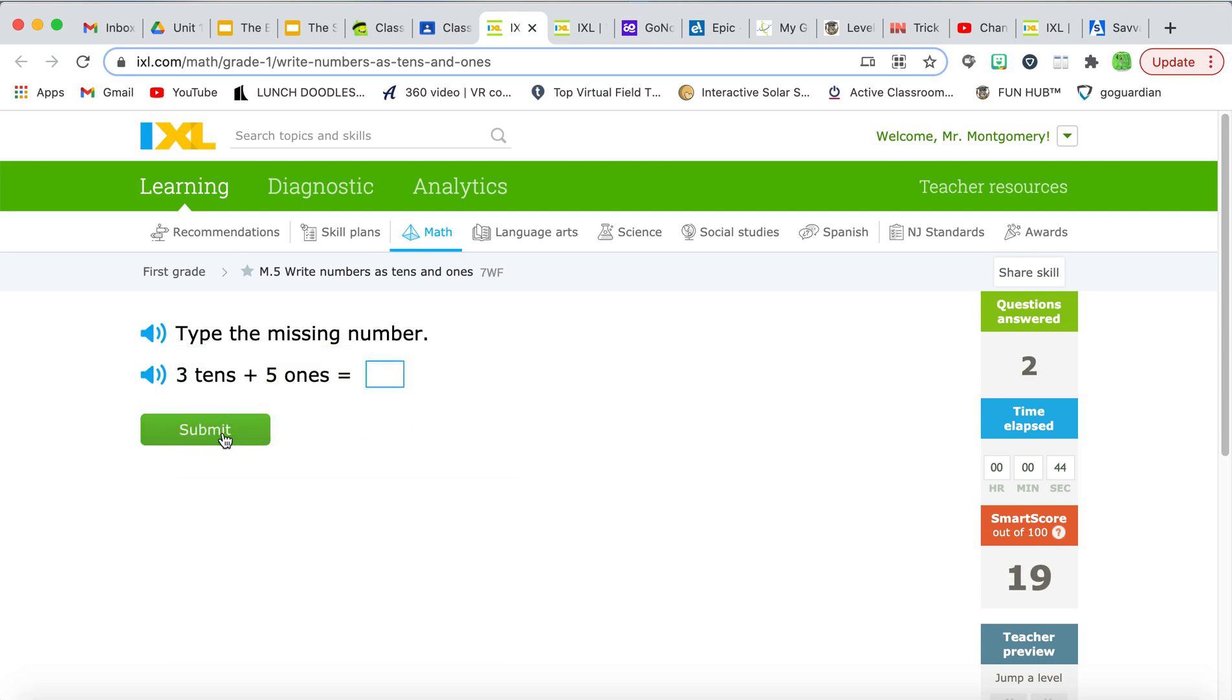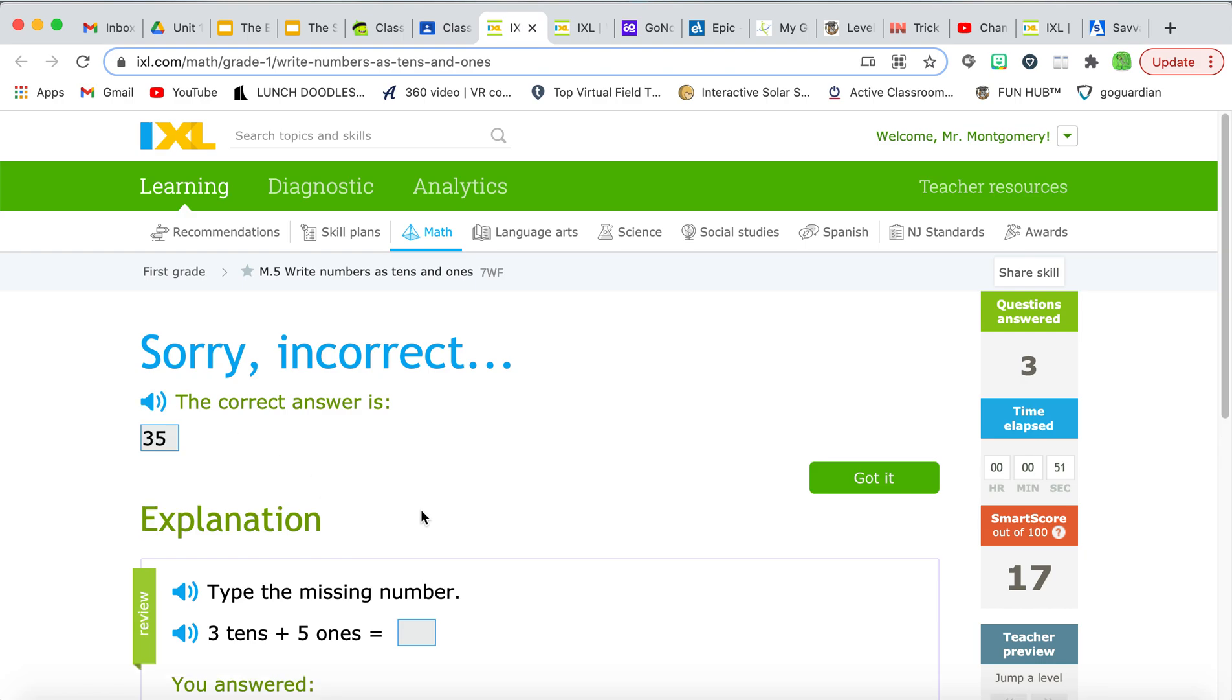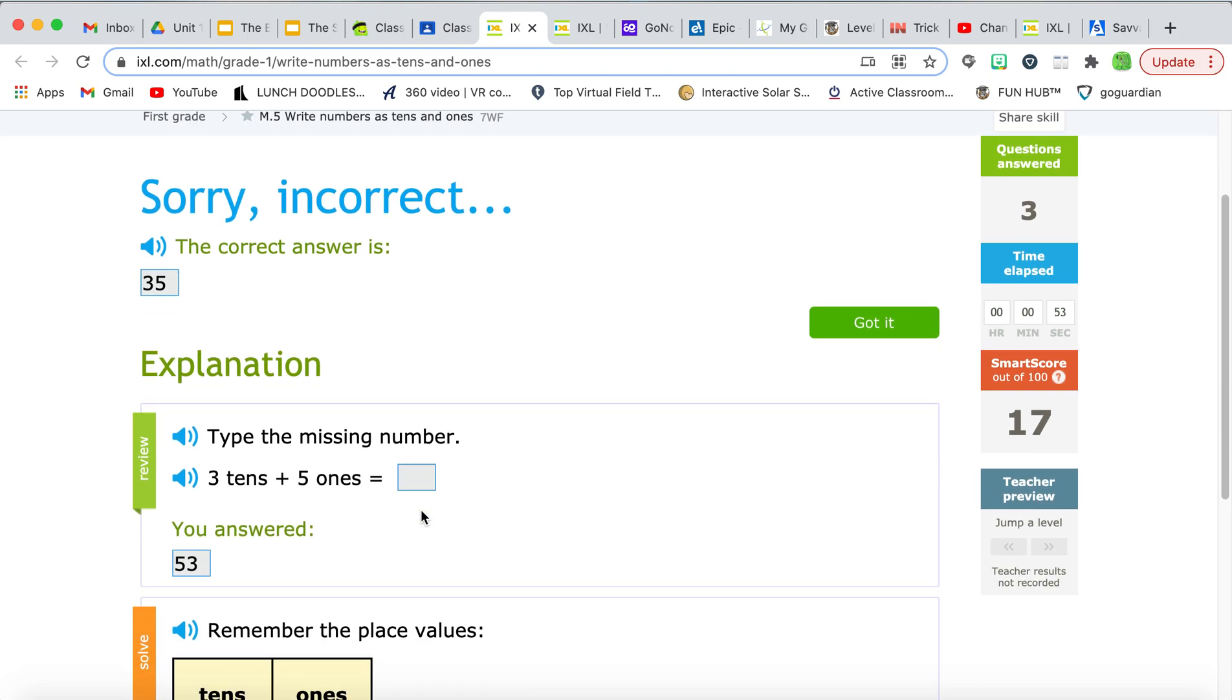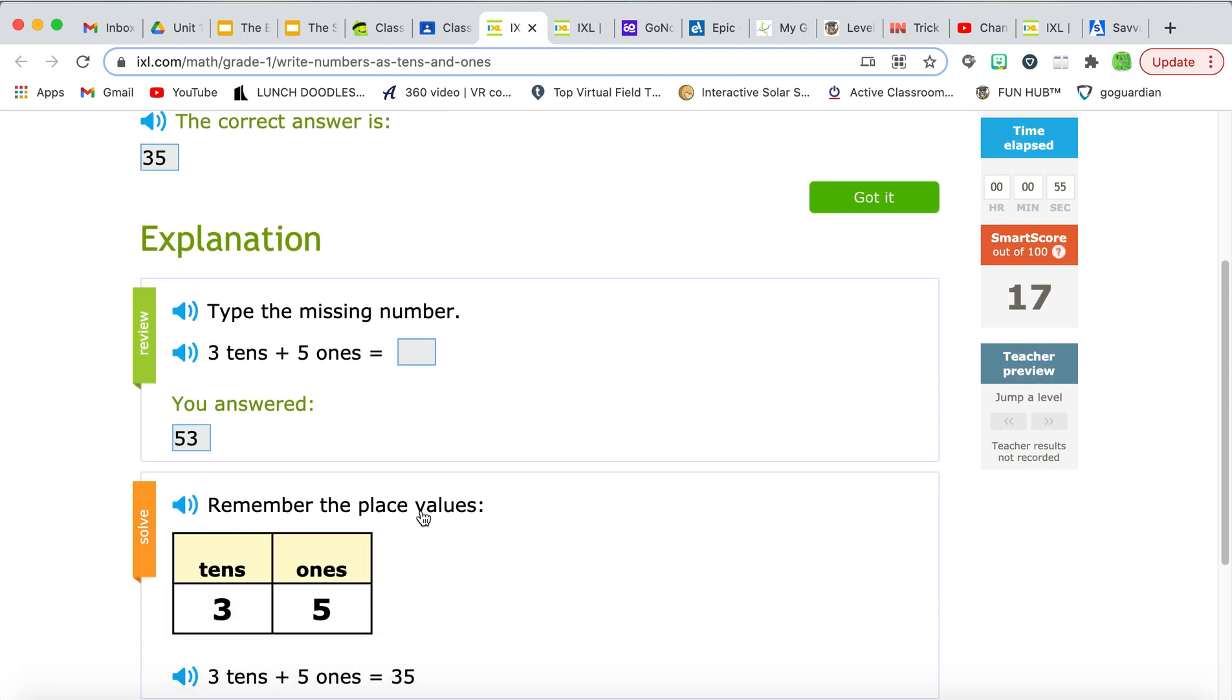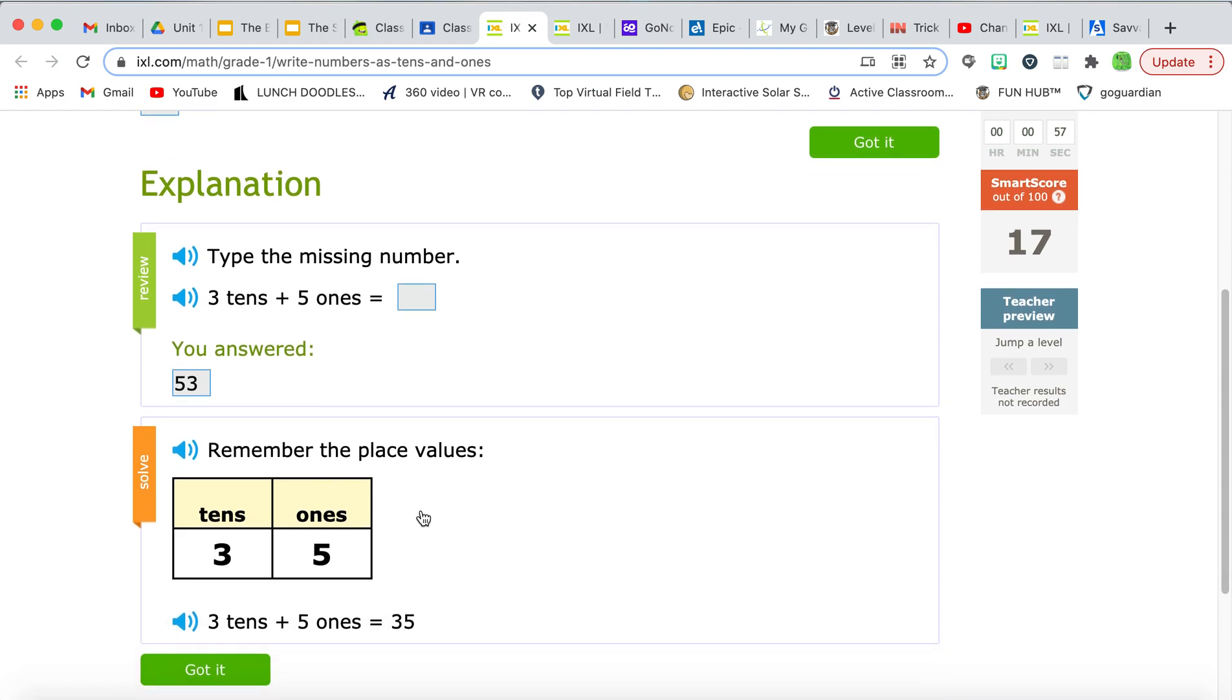And don't forget, if you accidentally type in the wrong answer, let's say I accidentally typed in the wrong answer here, it's going to say, oh, hold on. Let me show you what was incorrect about it. And it shows you everything. It'll even tell you what happened, what mistake you made. Just make sure you click on the sound buttons right here, and it will read it to you. And that's it.